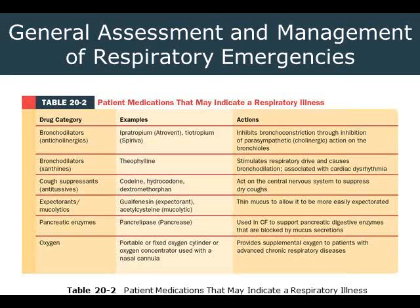There are also pancreatic enzymes like pancrelipase (Pancrease), used in the cystic fibrosis patient — not commonly run into, but there's enough of them out there. It helps support the pancreatic digestive enzymes that are blocked by the mucus secretion. People with cystic fibrosis are commonly thought of as having just lung problems, but it's actually problems throughout their entire body. And of course, oxygen — it's our atmospheric gas that our body thrives on. Giving a little supplemental O2 can raise oxygen levels and help people continue to thrive at home a little while longer.